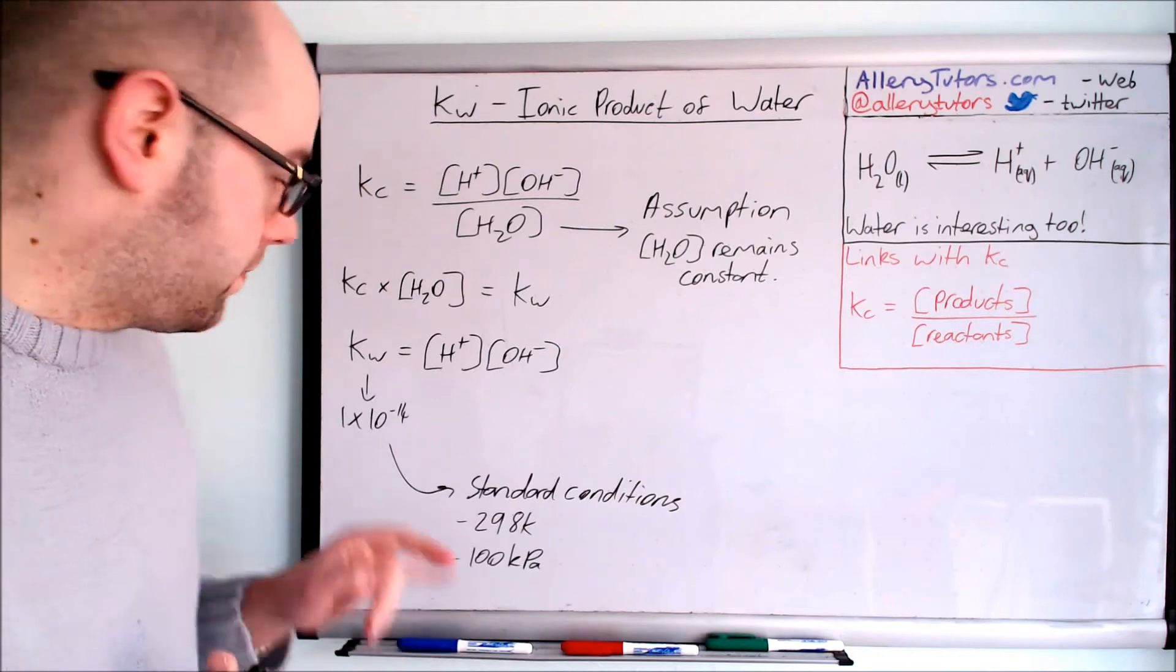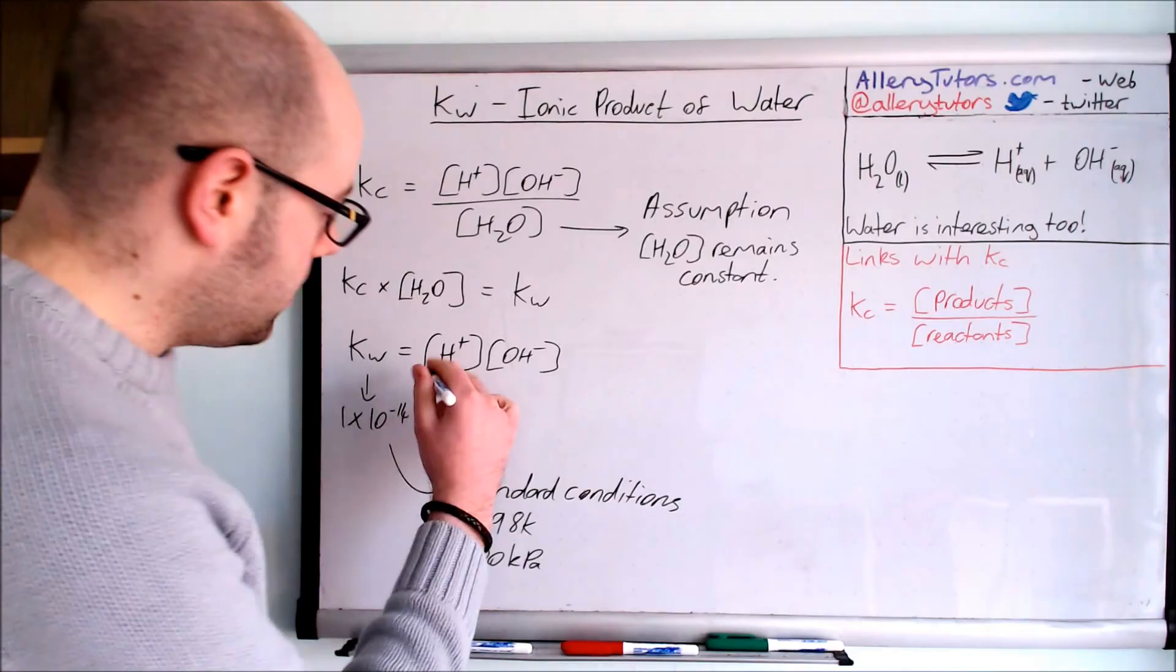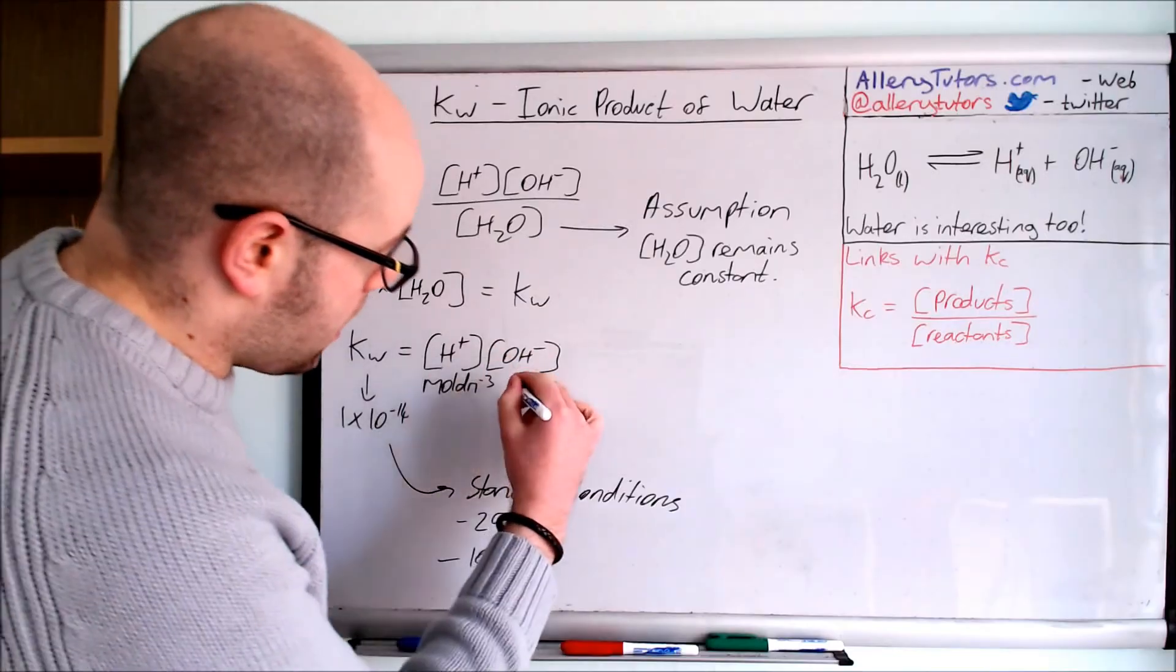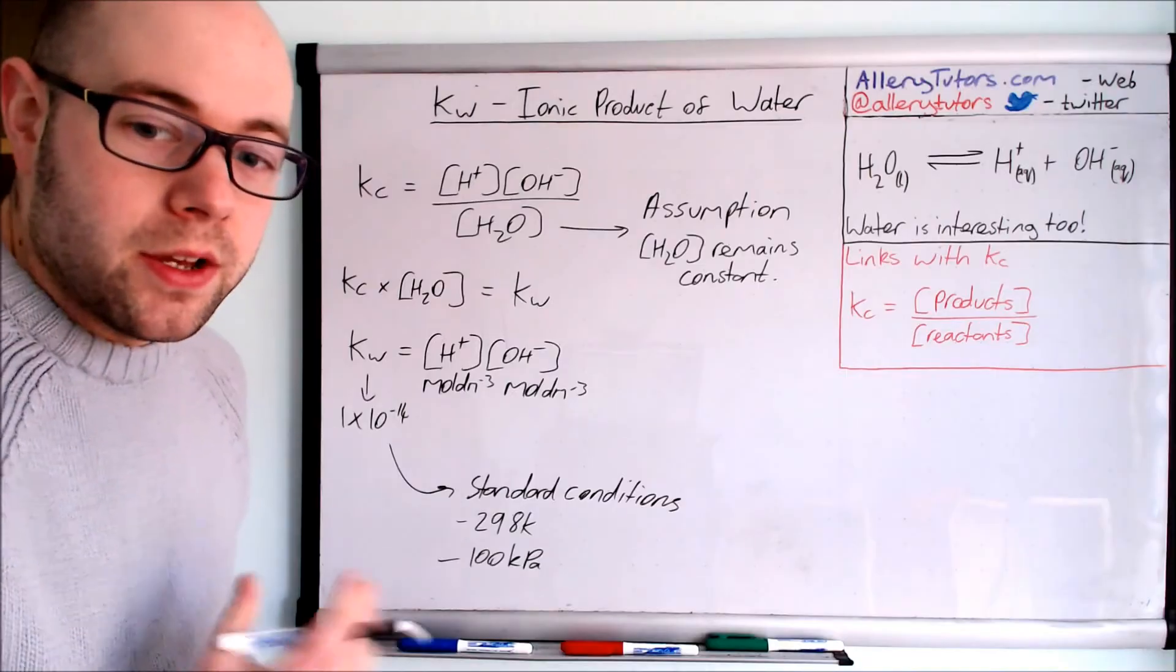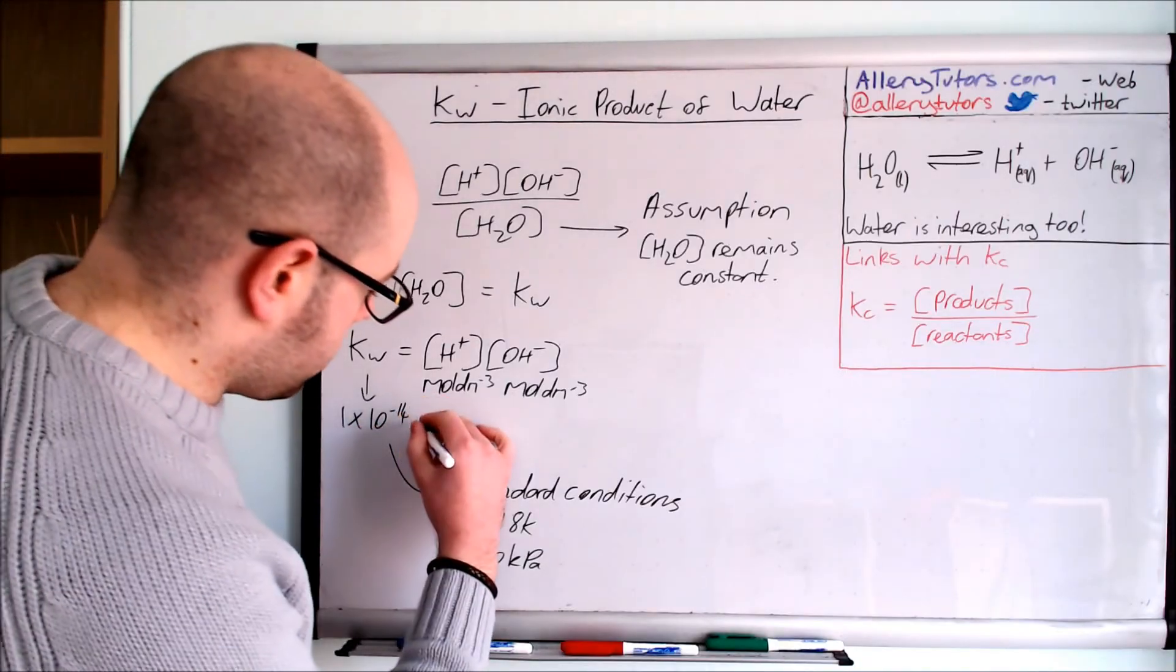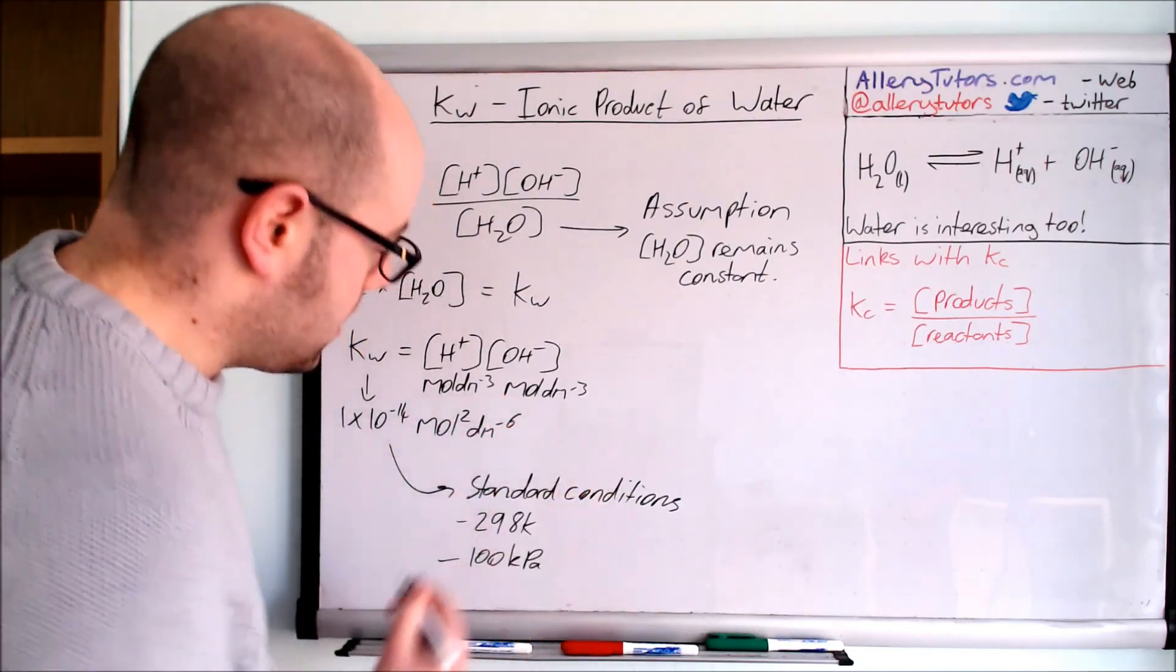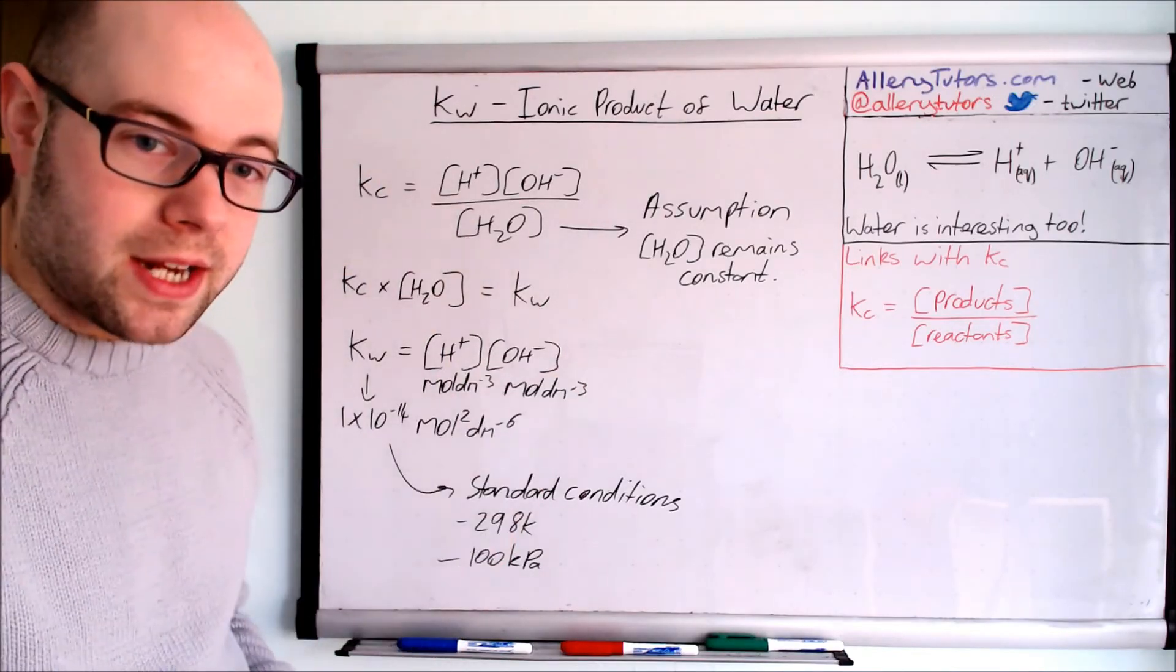The units for Kw can be worked out using this expression. The units for concentration is moles per decimeter cubed for H plus and also moles per decimeter cubed for OH minus. We just combine these two together to work out our units. So the units for this is going to be mole squared dm to the minus 6.